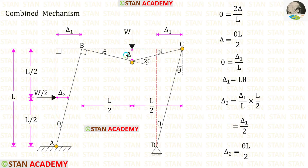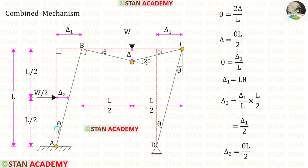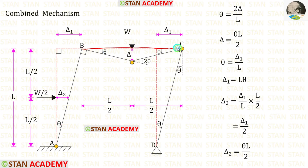Let us keep the beam displacement as δ, the sway displacement as δ1, and the displacement on the right of the load as δ2. Let us keep the angle at point A as θ. In joint B we have 90°, so this angle also should be θ.